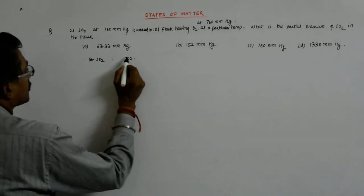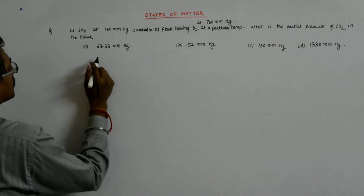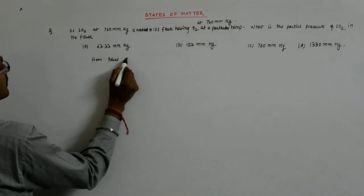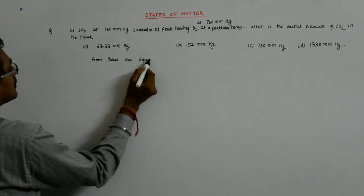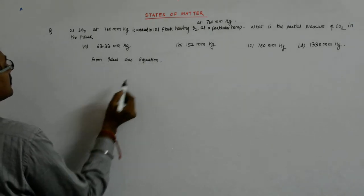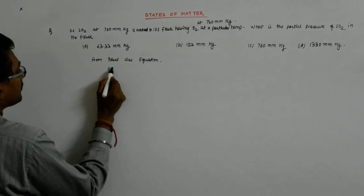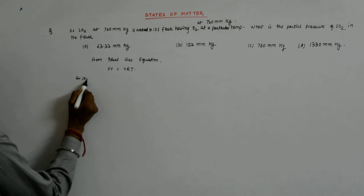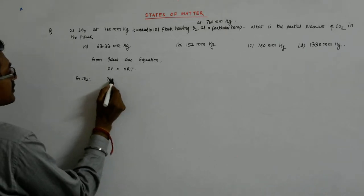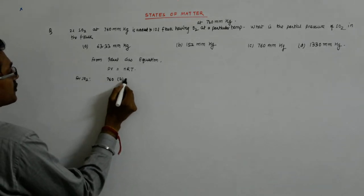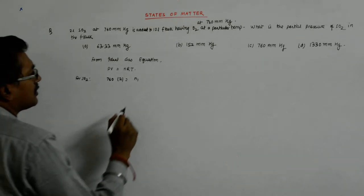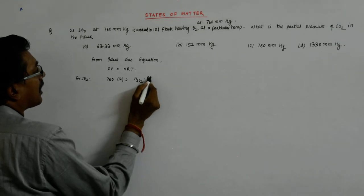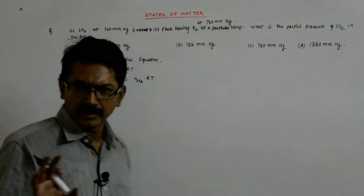So I am writing them as it is. From ideal gas equation, we have PV is equal to NRT. So for SO2 if I use it, then pressure is 760, volume is 2, this I write it as N1 or NSO2. R is a constant T, I don't know, so I keep it as T.